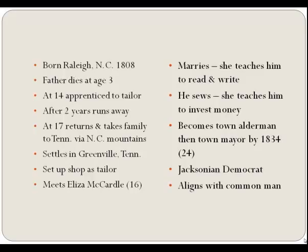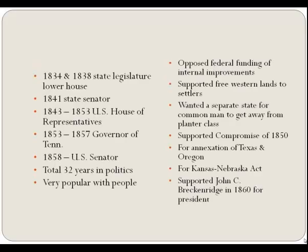He was such a likable person that he ran for alderman in town—he was going to serve just a year but served several terms and then became the mayor of Greenville. By around 1834, he was only 24 years old and had already been town alderman and mayor. He called himself a Jacksonian Democrat and aligned himself with the common men and the ideology of the populace.